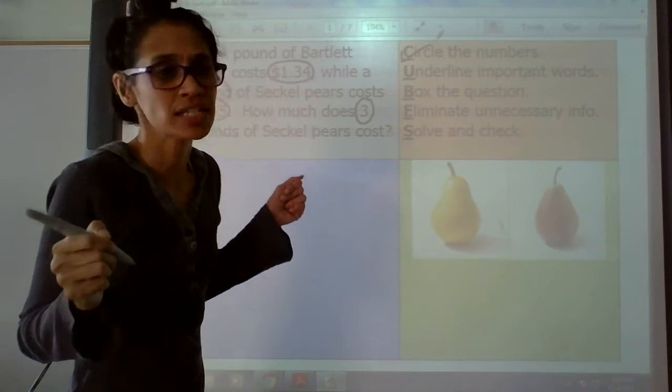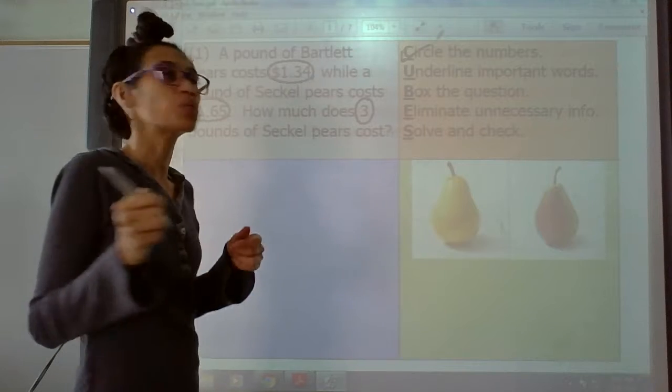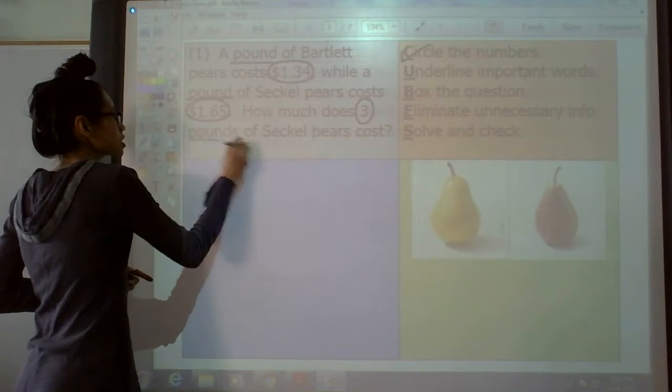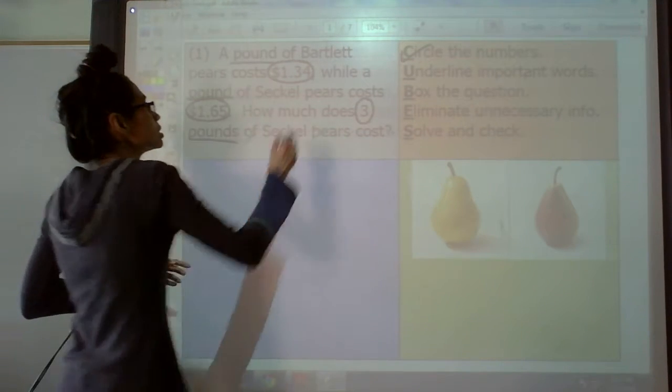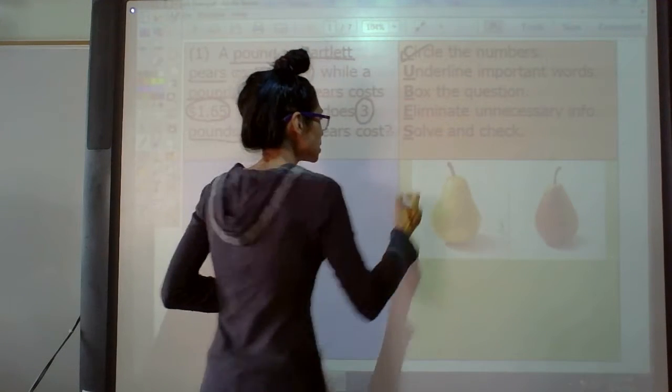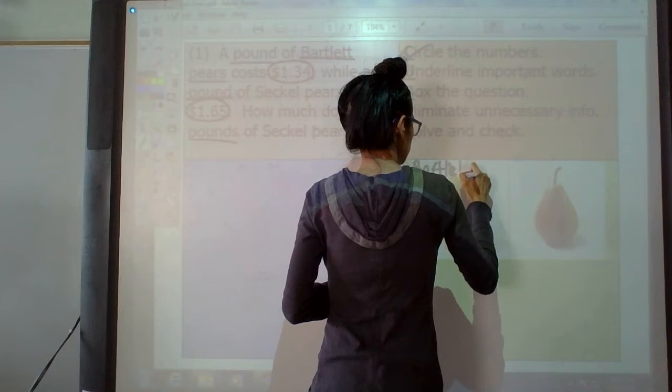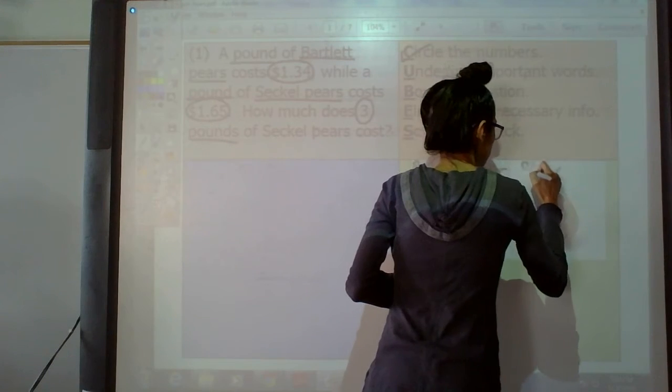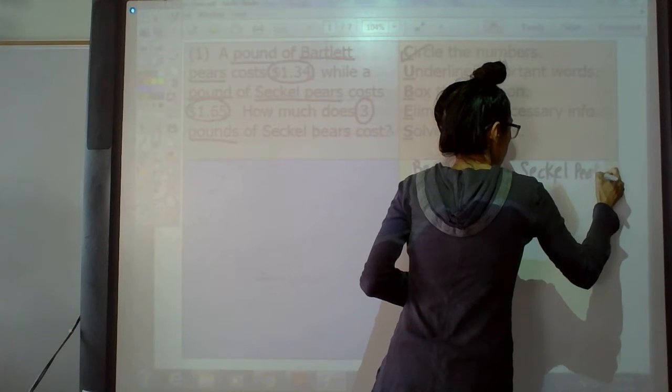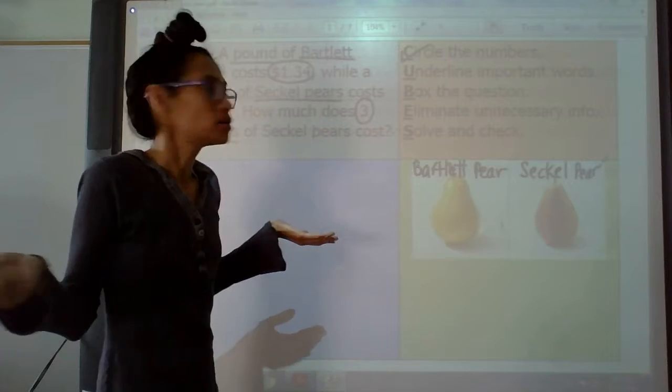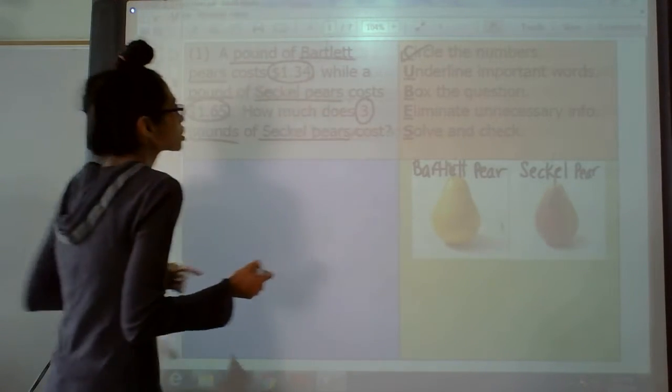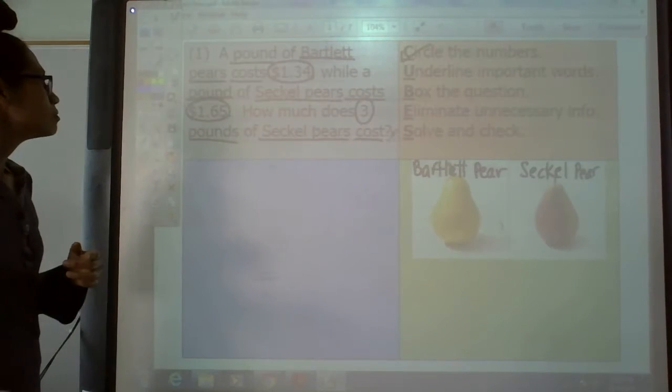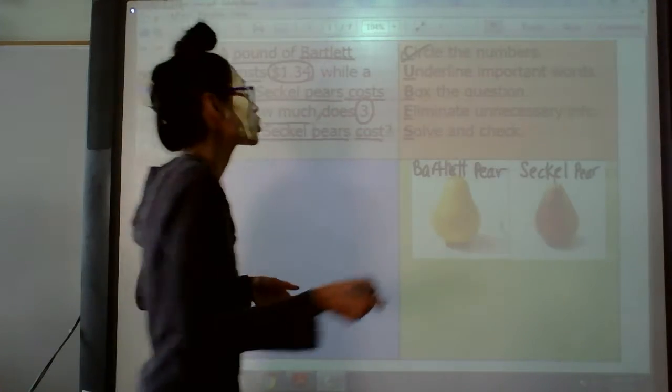The next step in our cubes clues is the U step. Underline important words. Help me find important words in this question. We can underline pound. Do you see pound? Yep, right there. Pound. Lots of pounds right there. What else? Bartlett pears. That's this one right here. Let me write that down. That is a Bartlett pears. And what else? Seckle pear. That's this one right here. You know what? I've never heard of that one. Learn something new. Right here, Seckle pears right here. What other important words do you see? We can underline cost. There's the word cost right there. Another word cost right there. Okay, we can underline how much. I think we're done with all the important words. Done with that.